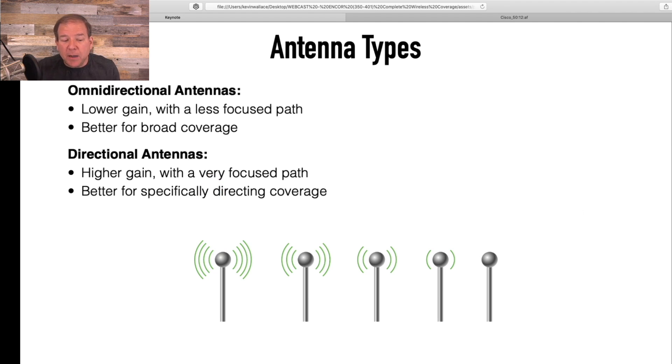So just to kind of sum up, omnidirectional, you're going to get a lower gain in any particular direction because you're dispersing your power equally in all directions. But if that's what you need, if you want to put one in the middle of your office and service all the surrounding cubicles, yeah, that's the way to go. But if you want to cover between two buildings or down a long hallway, or you want to target something very specifically, yeah, think about a directional antenna.